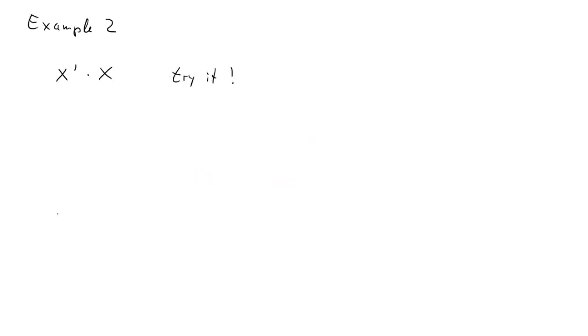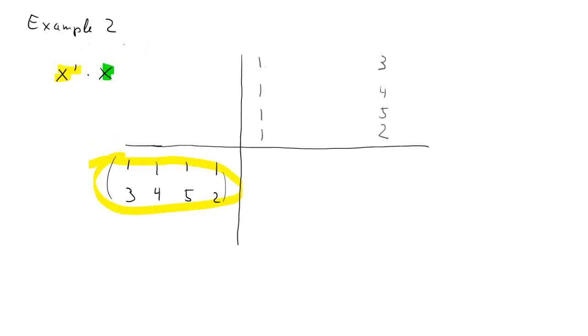Second example, X prime times X. Again, pause button and try. Here's the result. Here we got X prime, here we got X. And the result is going to be a 2 by 2 matrix. We calculate 2 by 4 times 4 by 2. The 4 cancels out, 2 by 2 is the result. Four elements to calculate. First row, first column first, the sum of the products of the elements.